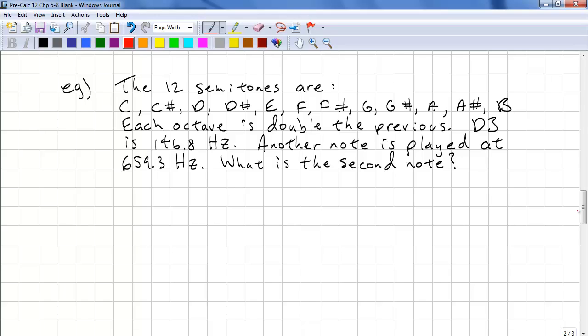Let's look at another problem. When we're doing music, there's 12 semitones. The semitones are C, C sharp, D, D sharp, E, F, F sharp, G, G sharp, A, A sharp, B. Recall that each octave is double the previous. So D3 is 146.8 hertz. Another note is played at 659.3 hertz. What is this second note? So we just do 659.3 equals 146.8, and since double is our rate we put 2 as the base, and it's n over 12 because we have 12 semitones in order to double.